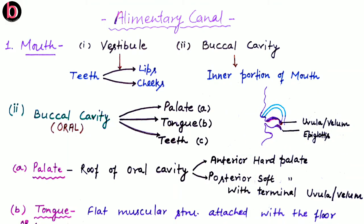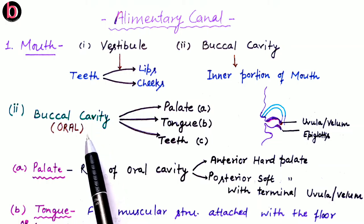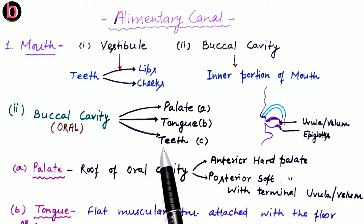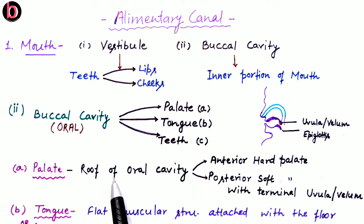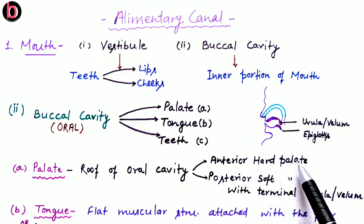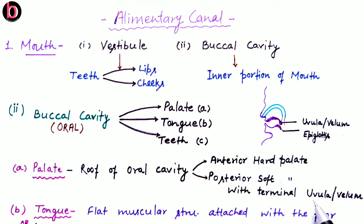The buccal cavity is the inner portion of the mouth surrounded by teeth. The buccal cavity, also known as the oral cavity, is divided into three parts: first, the palate; second, the tongue; and third, the teeth. The palate is simply known as the roof of the oral cavity. It is divided into two parts: the anterior portion, which is very hard and is known as the hard palate, and the posterior portion, which is soft and is known as the soft palate.